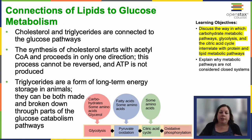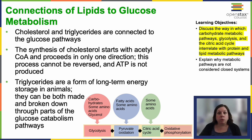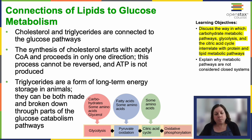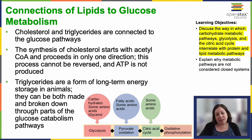Lipids are also connected to the glucose pathway. These include cholesterol and triglycerides. Cholesterol is crucial for cell membrane flexibility and serves as a precursor to steroid-based hormones — the natural steroid hormones produced by your body, not anabolic ones. Cholesterol synthesis begins with acetyl-CoA and proceeds unidirectionally; it does not produce any ATP.